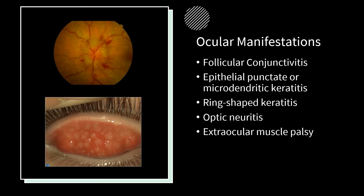Ocular conditions associated with Epstein-Barr include follicular conjunctivitis, epithelial punctate or microdendritic keratitis, and ring-shaped keratitis affecting the cornea. Epstein-Barr also causes decreased unilateral or bilateral visual acuity. Other manifestations include acute or chronic non-granulomatous iritis, optic neuritis, papilledema, and convergence insufficiency with extraocular muscle palsy.